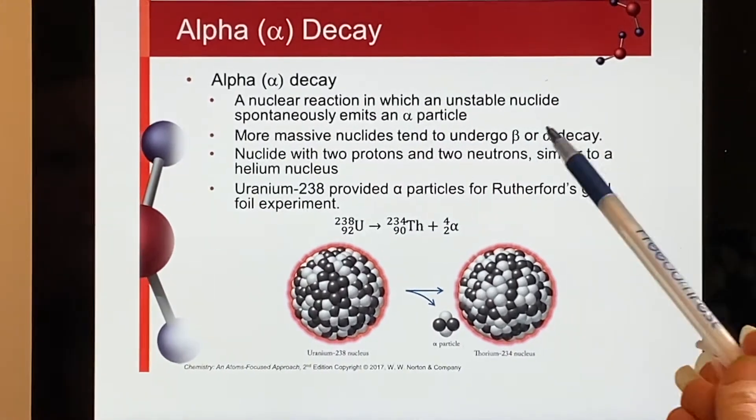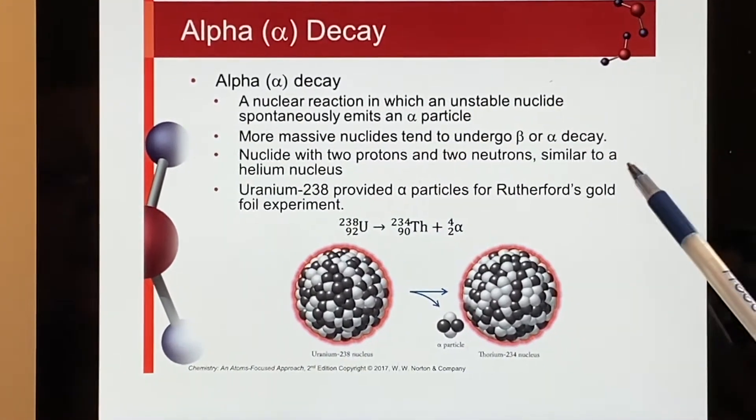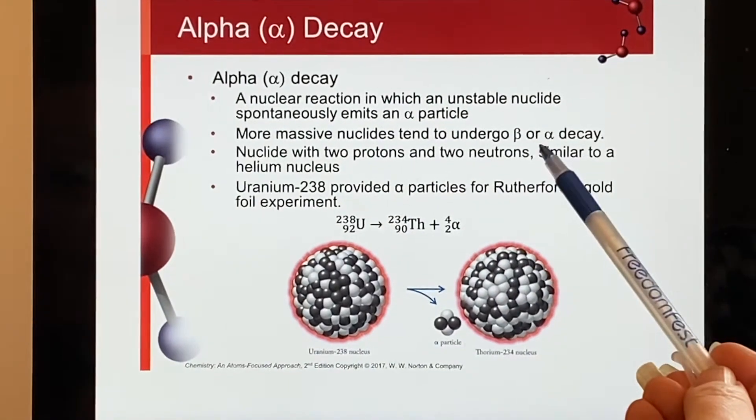But you know, this is like Marie Curie worked on these things, so they were using very heavy elements and so they were always observing alpha and beta decay.